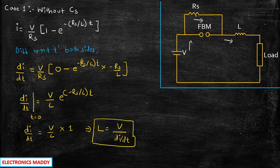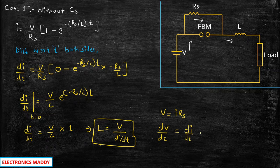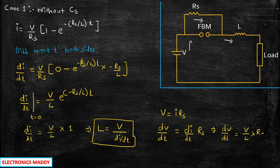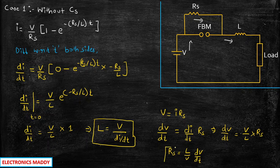We know the voltage across the resistor is given by V = I × RS. When we differentiate this with respect to T, we get dV/dt = (dI/dt) × RS. Substituting the value of dI/dt into this expression, we finally get RS = (L/V) × (dV/dt). This is another very important expression for solving the numericals. So we have now arrived at the expression for L and the expression for RS.